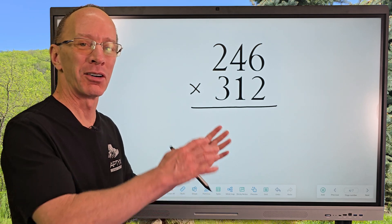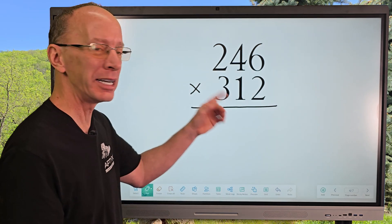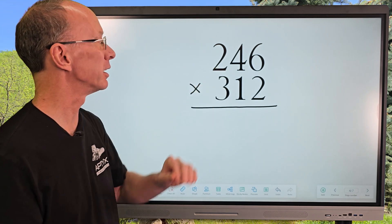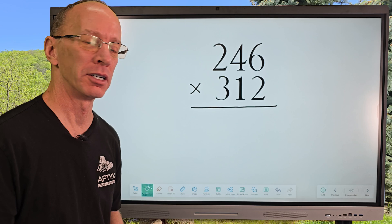Hey, welcome to the show. Today on the show, I got a special request to do a three-digit number times another three-digit number. We're going to take 246 times 312.